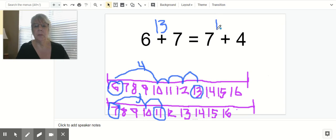So, I'm going to put that number up here. Now, I'm going to read my equation again. 6 plus 7 is the same as 13. And 7 and 4 more is equal to 11. Those two numbers are not the same. So, my equation is not true.